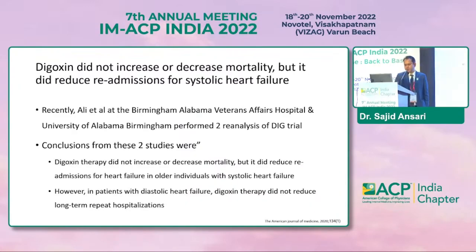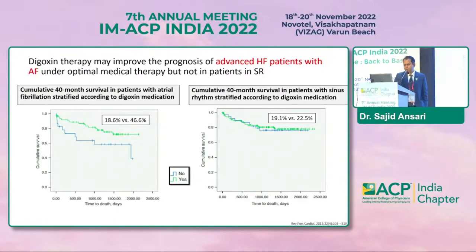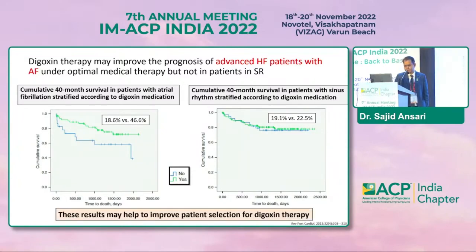Digoxin did not increase or decrease mortality, but it did reduce readmission for systolic heart failure. When LV function is poor and the patient is not in sinus rhythm — when the patient has atrial fibrillation with fast ventricular rate — this molecule is always a very wonderful option. Digoxin therapy may improve prognosis in advanced heart failure with atrial fibrillation under optimal medical therapy, but not in patients in sinus rhythm. One trial compared patients with low ejection fraction over 40 months survival in sinus rhythm versus atrial fibrillation arms, showing better response in the atrial fibrillation arm. This may improve patient selection for digoxin therapy.